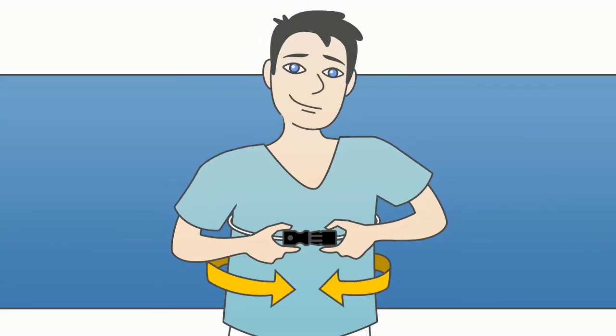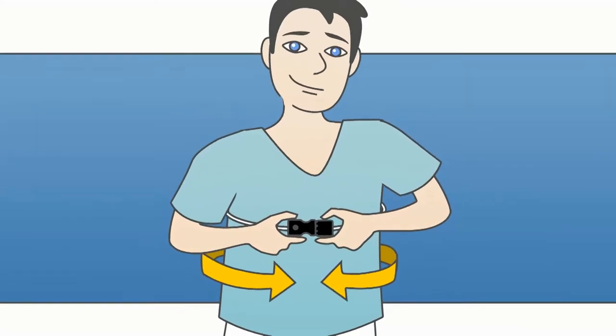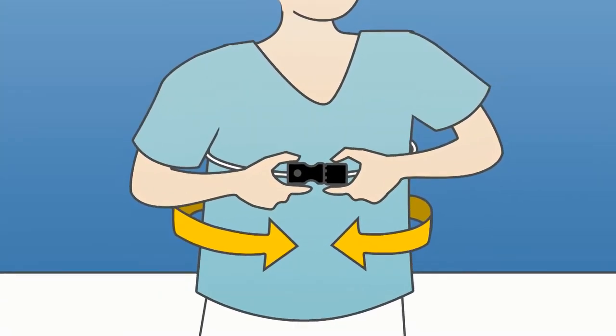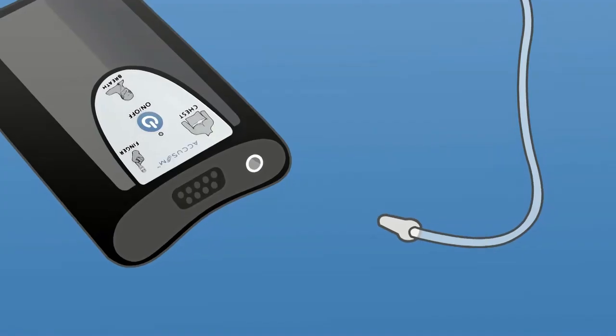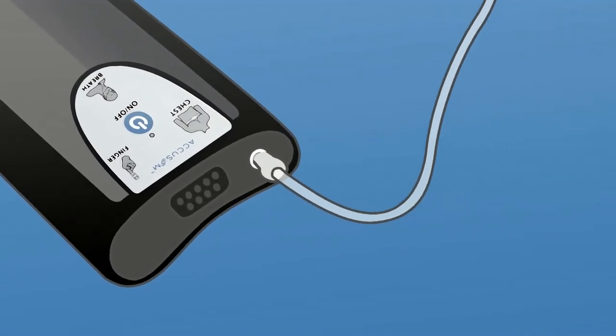First, attach the chest sensor by connecting the black clips around your body. Adjust the belt so it fits snugly under your breasts then connect the other end to the AccuSom.